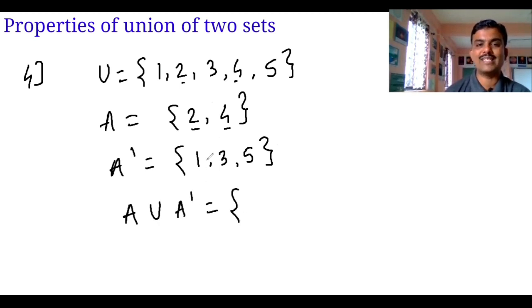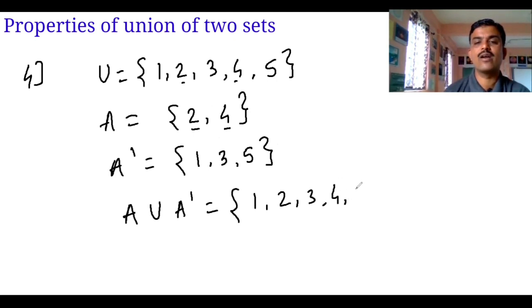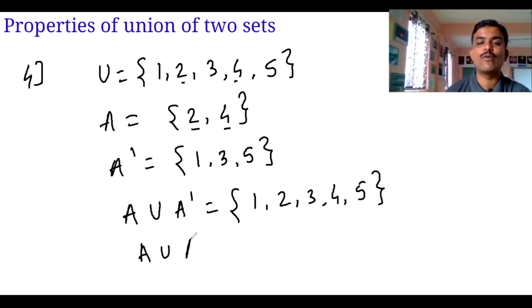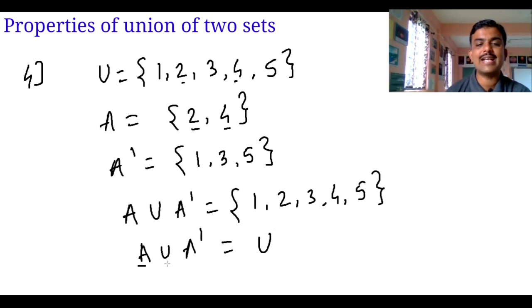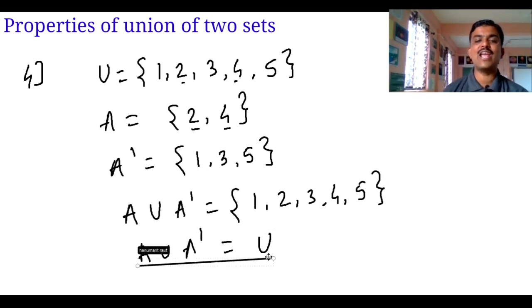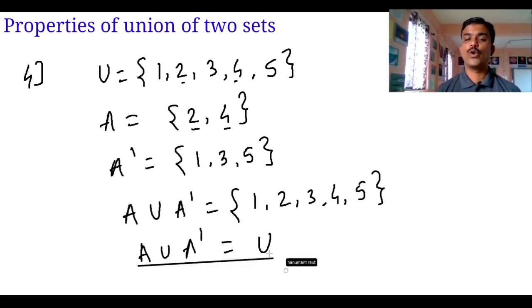So what is the answer? It becomes {1, 2, 3, 4}, which is nothing but the universal set. So the next property is: A union A dash is equal to the universal set.